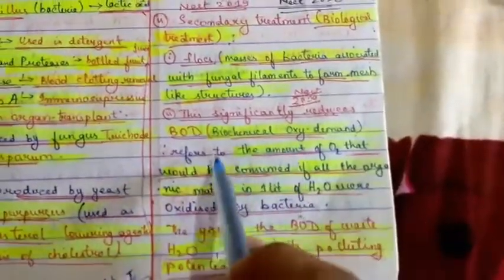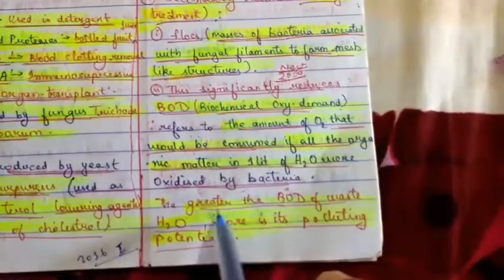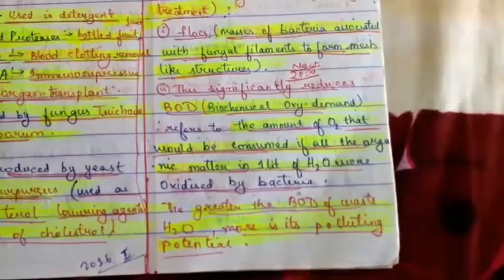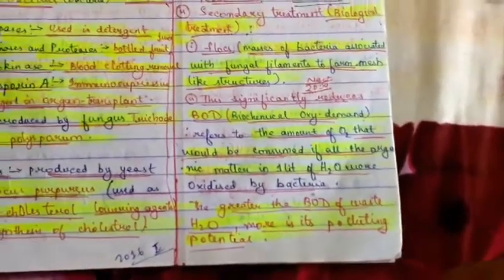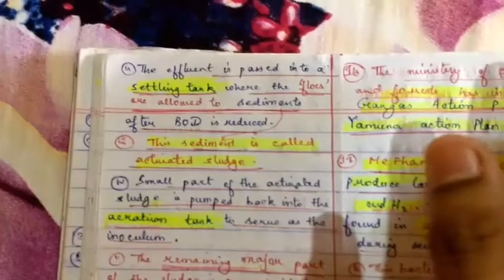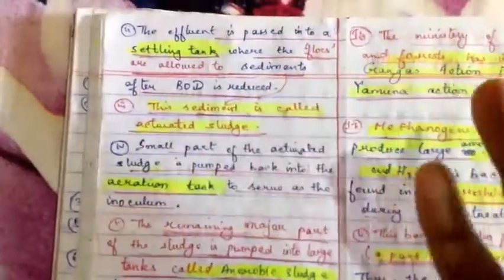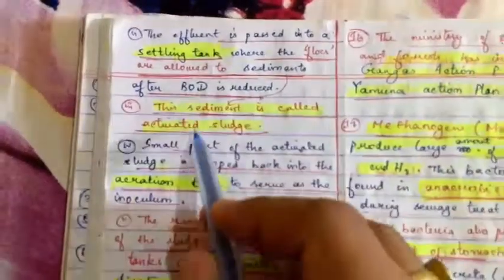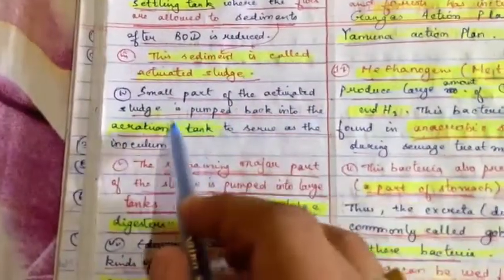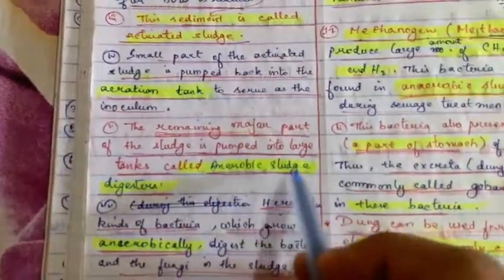BOD refers to the amount of O2 that would be consumed if all the organic matter in one liter of water were oxidized by bacteria. The greater the BOD of waste, the more is its polluting potential. The effluent is passed into a settling tank where flocs are allowed to sediment after BOD is reduced. This sediment is called activated sludge. A small part of activated sludge is pumped back into the aeration tank to serve as the inoculum.